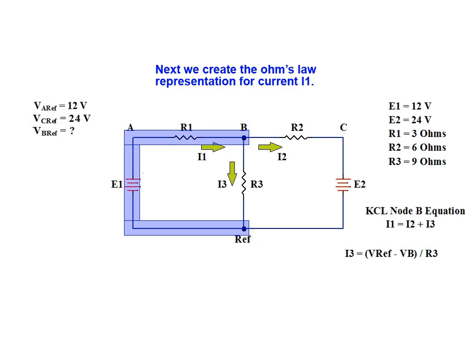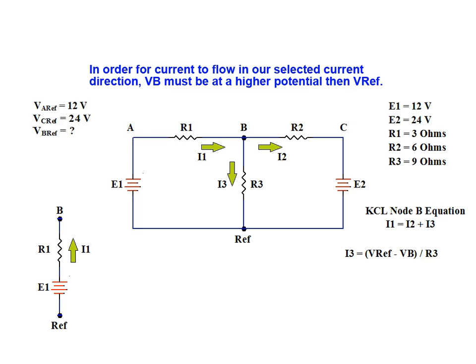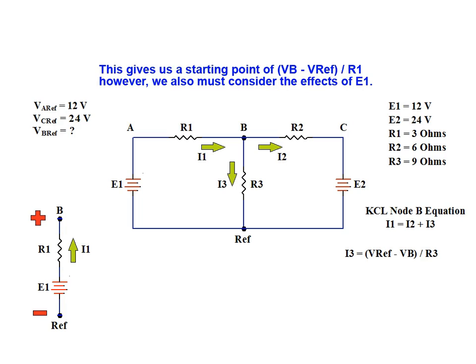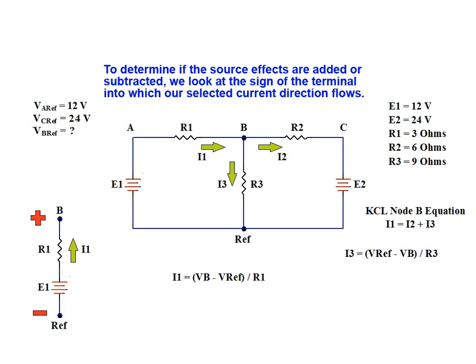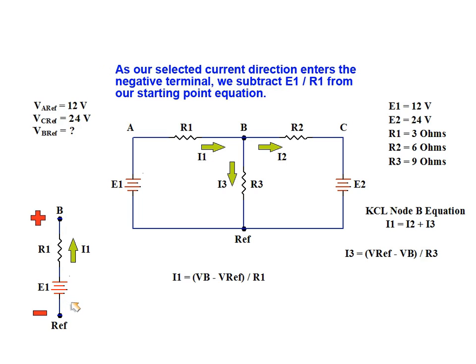Next, we create the Ohm's law representation for the current I1. In order for current to flow in our selected direction, Vb must be at a higher potential than Vref. This gives us a starting point of Vb minus Vref, all divided by R1. However, we must also consider the effects of the E1 voltage source, and either add or subtract E1 over R1. To determine this, we look at the sign of the terminal into which our selected current direction flows. As our selected current direction enters the negative terminal of the source, we subtract E1 over R1 from our starting point equation.